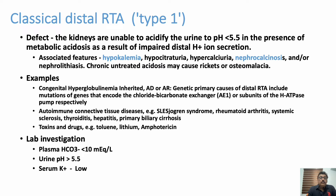Toxins such as toluene, lithium, and amphotericin can also cause Type 1 RTA. Lithium is very important because lithium toxicity can occur with massive acute dosing in a patient chronically on lithium, or patients admitted with lithium-induced toxicity, as many of these patients have depressive disorders. Amphotericin, a drug used in fungal infections, can also sometimes produce RTA.